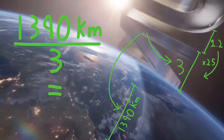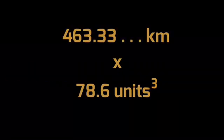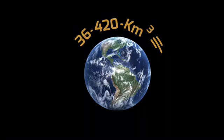So, if that's 3 units, we can find out that 1 unit is 463.333 repeating kilometers. Once we have that number, using this number from before, we can find the cubic kilometerage of our logo. Turns out to be a whopping 36,420 cubic kilometers of Universal logo flying around middle Earth orbit.